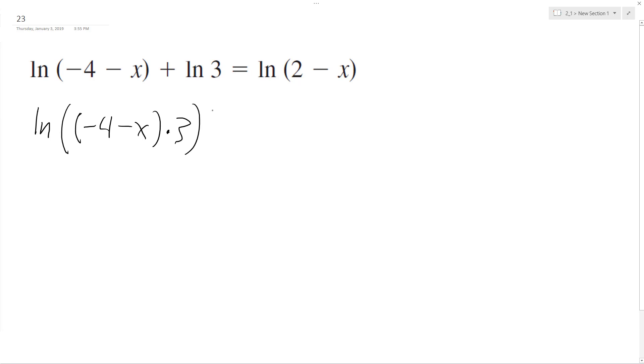So times 3, and then we have equals natural log 2 minus x. So combining these, we end up with natural log of negative 12 minus 3x equals natural log of 2 minus x.